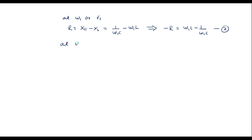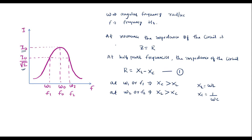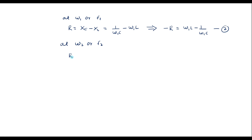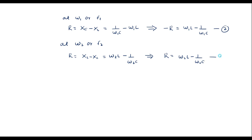Similarly, at ω2 or F2, since XL is greater than XC, equation 1 can be written as R = XL − XC, because XL is dominant here, which equals ω2·L − 1/(ω2·C). Let me call this equation 3.